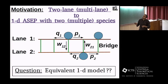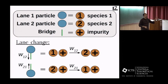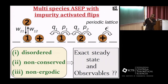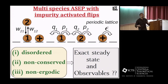Similarly, in the original model if there is a particle in lane two and it sees the bridge, it can cross to lane one. In our model, this means species two hitting an impurity flips to species one. So we have mapped a two-lane ASEP to a one-dimensional ASEP with two species and impurities. A similar mapping can be done from multi-lane ASEP to a one-dimensional ASEP with multiple species and impurities. To summarize the dynamics: species one hops with rates p1 and q1, species two hops with rates p2 and q2, and impurities activate flips between the species. This model is interesting as a non-equilibrium stochastic process because it is disordered (different species and impurities have different hop rates), non-conserved due to the flip dynamics, and also non-ergodic.